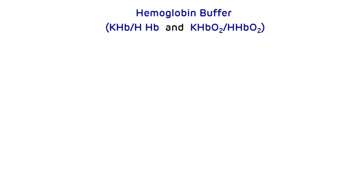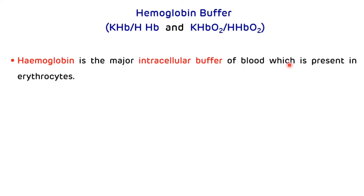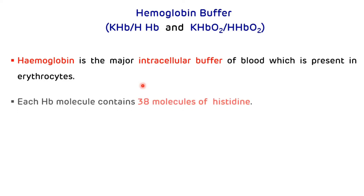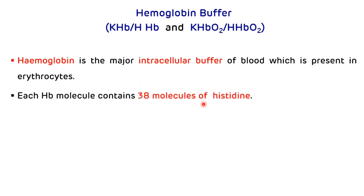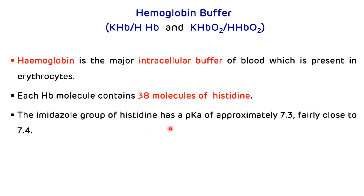Hemoglobin is the major intracellular buffer of the blood, present in erythrocytes. Each hemoglobin molecule contains around 38 histidine residues, compared to albumin which contains around 32. The imidazole group of histidine has a pKa around 7.3, very close to the physiological pH of blood, which is why hemoglobin and albumin play a very important role in regulation of physiological pH.